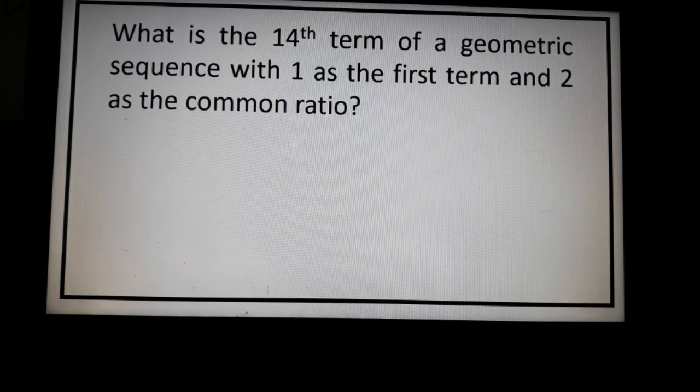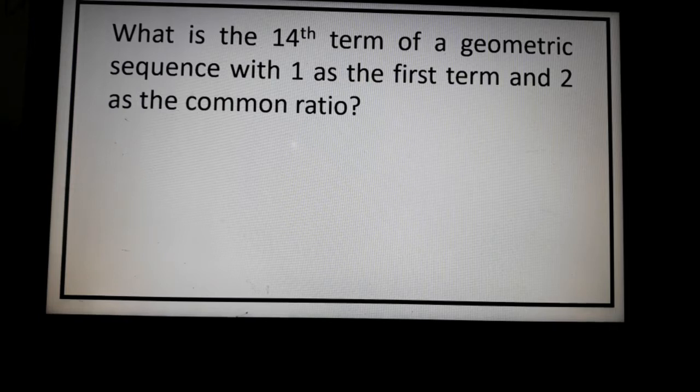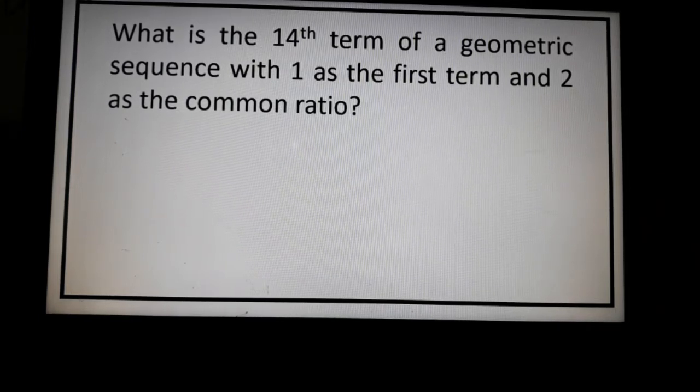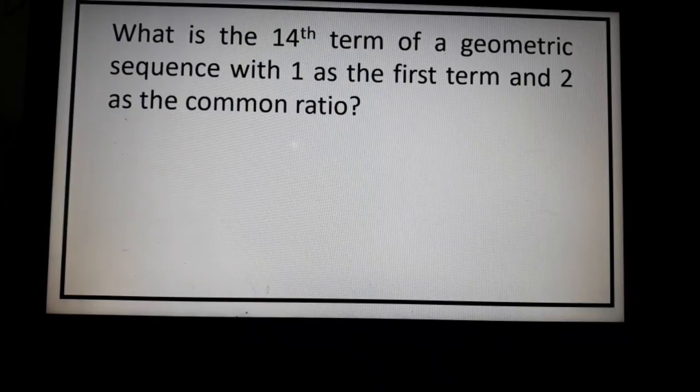Let's have our first example. What is the 14th term of a geometric sequence with 1 as the first term and 2 as the common ratio? Remember that for geometric sequence, you need to multiply the common ratio repeatedly from the previous number to create a geometric sequence. So in this case, the given first term is 1 and the common ratio is 2. So what we need to do to find out the 14th term is to multiply 2 repeatedly.